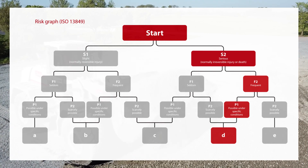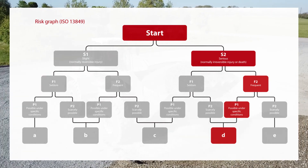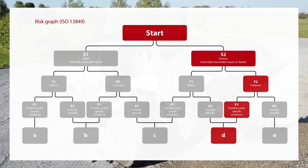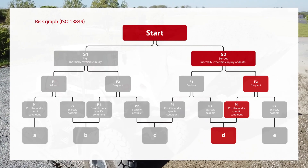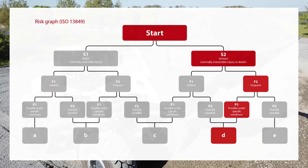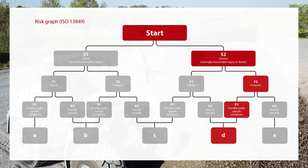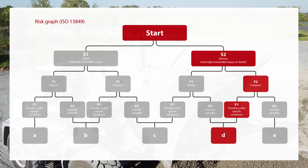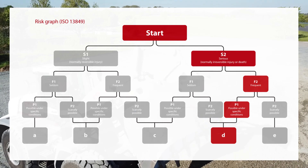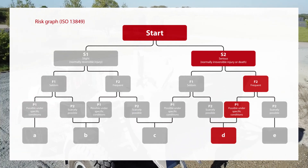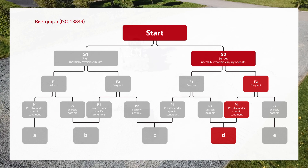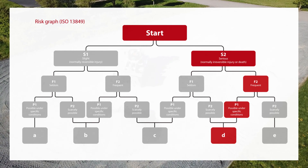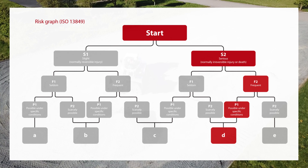We decide the severity of injury is serious, the exposure is frequent, and the avoidance is possible under certain conditions, which leads us to a required performance level of D. This means that for any applicable safety function applied for risk reduction of this hazard, a performance level of D or higher would be adequate. All other machine functions related to steering are evaluated in the same way.